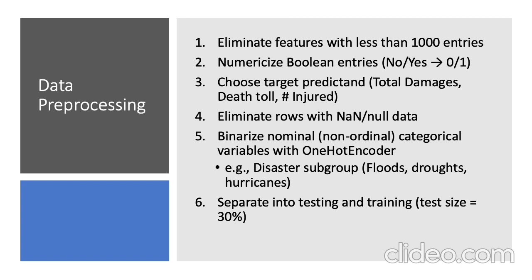What one-hot encoding means is: for something like wind speed, 50 miles per hour is less than 100 miles per hour — that ordering makes sense. But for something like a disaster subgroup — floods, droughts, and hurricanes — if we convert these into numbers like 1, 2, or 3, that would imply floods are less than droughts for some algorithms. So we binarize that by making extra binary features: 1 or 0 for flood, 1 or 0 for drought, 1 or 0 for hurricanes, etc. Finally, we separate our data into testing and training sets using a test size of 30%.